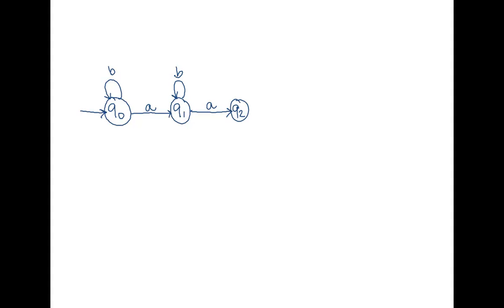Now let's think about if I'm in Q2: if I see an A, I want to go to a new state Q3, which means I've seen three A's. Remember that our language is the set of strings that contain exactly three A's, so Q3 is a final state. And if I'm in Q2 and I see any B's, I'm just going to stay put, because it means I've seen two A's and now I'm reading some B's. So far, so good.